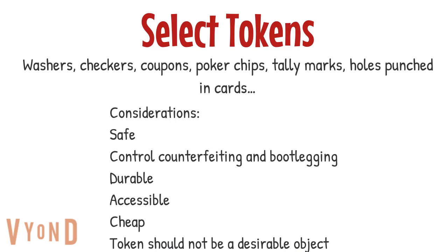Some considerations when selecting tokens: make sure the items are safe. You want to control for counterfeiting and bootlegging — for example, if you're using raffle tickets, make sure learners can't recreate those tokens and cheat the system. You want them to be durable, accessible, and cheap. Lastly, make sure the token itself is not a reinforcer, since it's about delayed reinforcement. If the token becomes reinforcing on its own, you can run into issues with satiation.